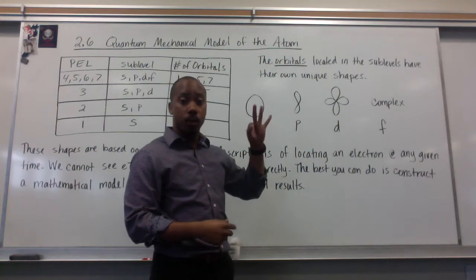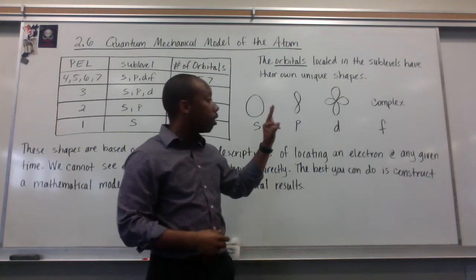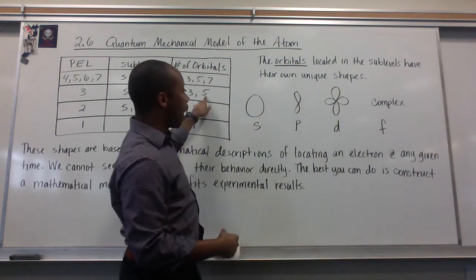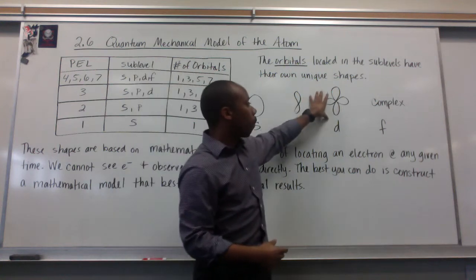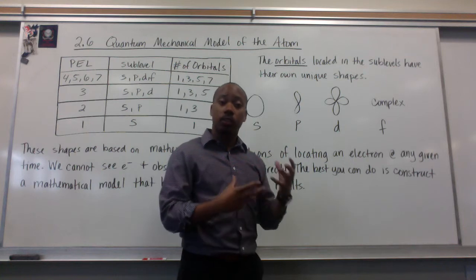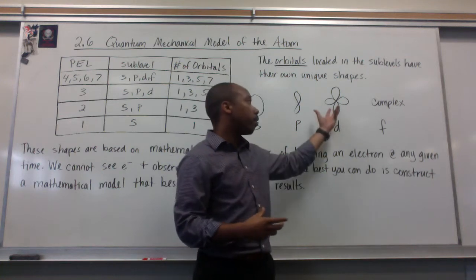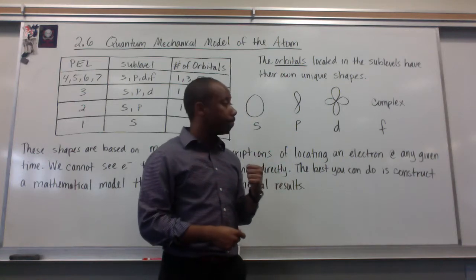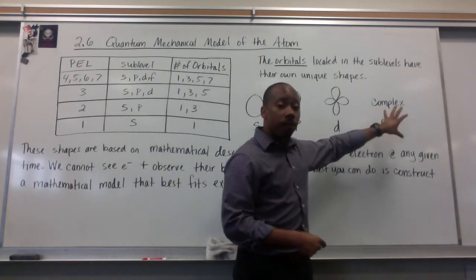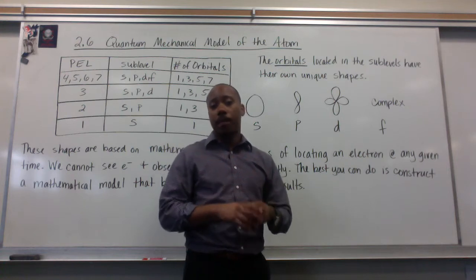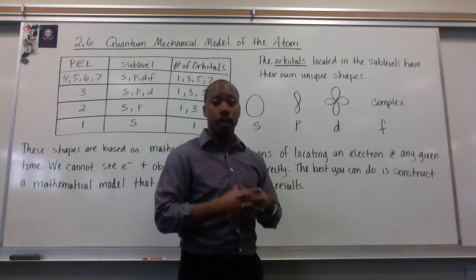I have three of those for sub-level P. For sub-level D, I have five orbitals that look like a four-leaf clover, and the electrons are inside each of these orbitals. In sub-level F, it does have a shape, but it's a very complex shape, and I'm not going to draw it here on the board.